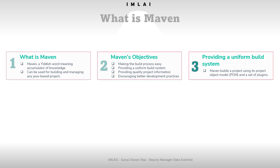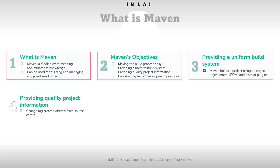The third objective is providing quality project information. Maven provides useful project information that is in part taken from your POM (Project Object Model) and in part generated from your project sources. For example, Maven can provide a changelog created directly from source control, cross-referenced sources, mailing lists managed by the project, dependencies used by the project, and unit test reports including coverage.